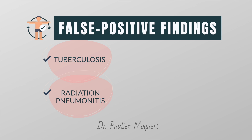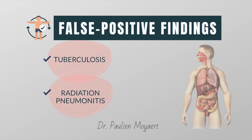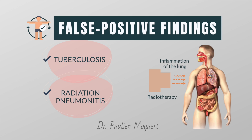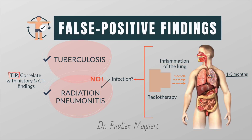Another example is radiation pneumonitis — an inflammation of the lung tissue caused by radiation therapy to the chest. It typically occurs following high doses of external beam radiotherapy, for example in lung cancer, and appears between one to three months after radiation therapy. This can commonly lead to a misdiagnosis of infection. It is therefore important to elicit a history of radiation from the patient and to correlate the increased uptake with the CT findings to avoid missing a disease recurrence.